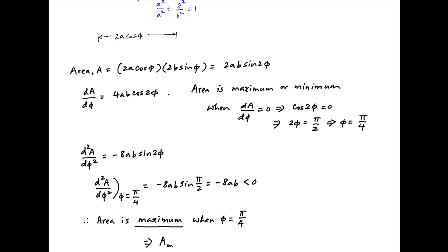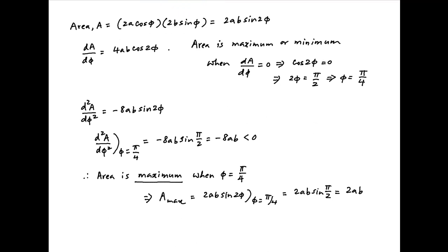The area of the largest rectangle that can be drawn within this ellipse is equal to 2ab sin 2φ, where φ = π/4, which equals 2ab times sin(π/2), which equals 2ab. And this is the required answer.